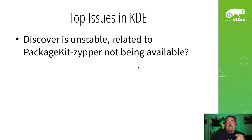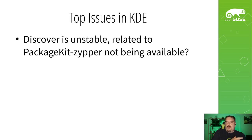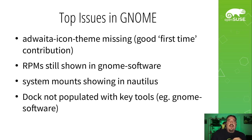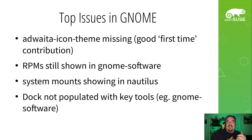Top issues on the KDE side: Discover — when you remove the PackageKit backend and just set it up with Flatpak — seems way more unstable than usual and is crashing constantly. On the GNOME side, I did a fresh installation before this presentation and realized that sometime between the last time I installed it and now, something went wrong with the dependencies for the icon theme, so you end up with an installation that has no icons and everything is a question mark.